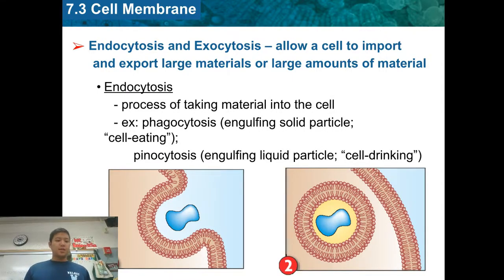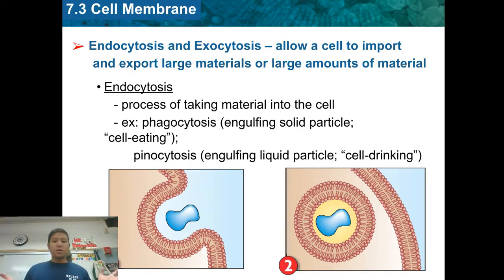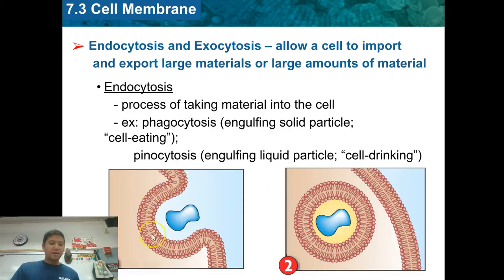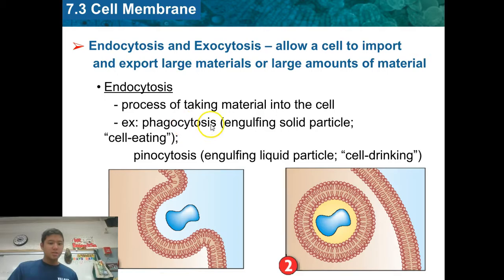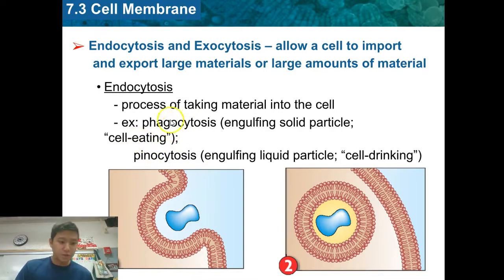One example of active transport is endocytosis — 'endo' meaning in. It's when we take a large amount of materials and bring them into the cell through the plasma membrane. The phospholipid bilayer makes a little divot, swallows up that foreign material, and puts it inside a little bubble called a vesicle. If we're engulfing something solid, we call this phagocytosis. If we're engulfing something liquid, we call this pinocytosis. Both are versions of endocytosis.